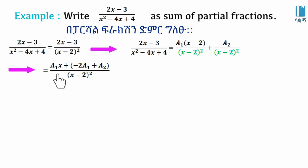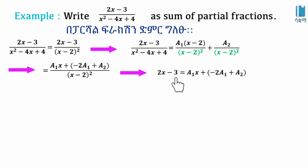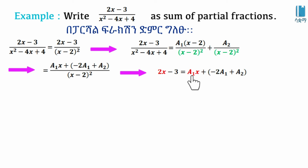Setting the numerators equal: 2x minus 3 equals A1·x plus minus 2·A1 plus A2. Comparing the x coefficients gives A1 equals 2. Comparing the constant terms: negative 3 equals negative 2·A1 plus A2, so we compute negative 2 times A1 plus A2.